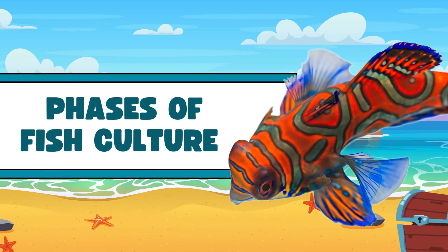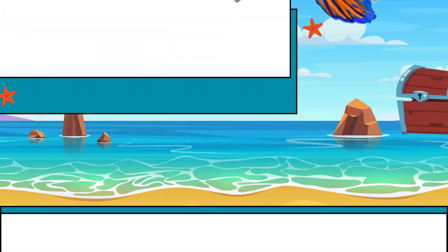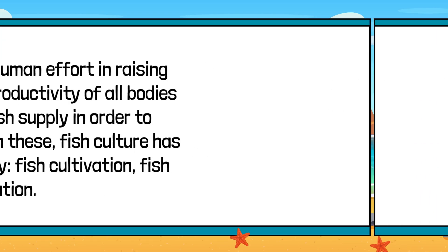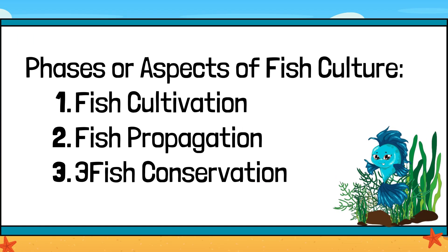Phases of Fish Culture: Fish culture embodies the human effort in raising or maintaining the maximum productivity of all bodies of water, and in maintaining fish supply in order to satisfy human needs. To attain these, fish culture has three different aspects: fish cultivation, fish propagation, and fish conservation.